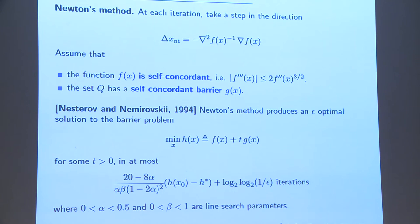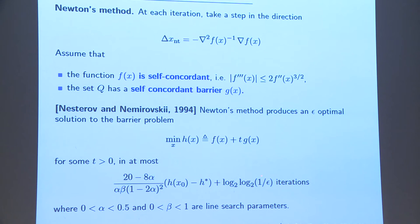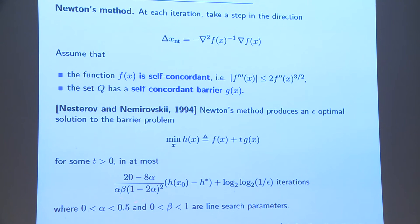Once you make that assumption and focus on solving a barrier problem — where the barrier itself is self-concordant — you can bound the number of iterations required to get a solution with precision epsilon by some coefficient times the difference between the value of the barrier at the initial point and its optimum, plus log log one over epsilon iterations. For all reasonable values of epsilon this second term is basically three, and the first coefficient depends only on parameters you set for the line search in the Newton step.